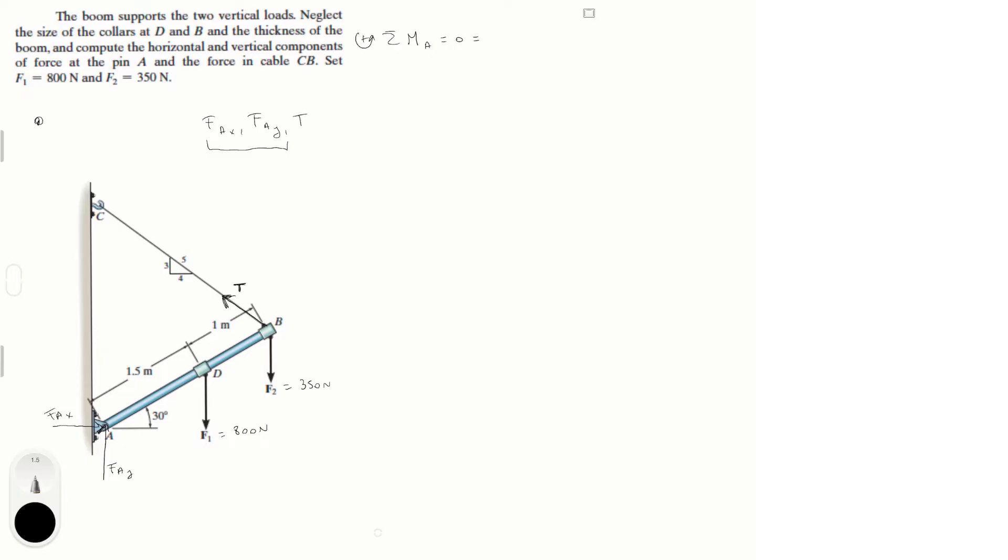First we have the moment created by f1, which is equal to f1 times the distance from A to here. This distance is given by 1.5 times the cosine of 30, and it's negative because it's trying to turn it clockwise.